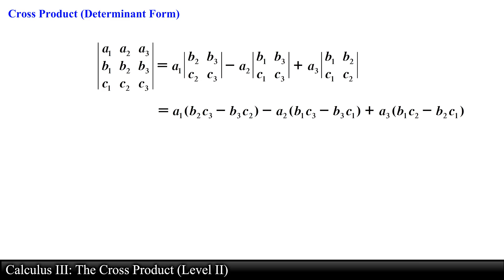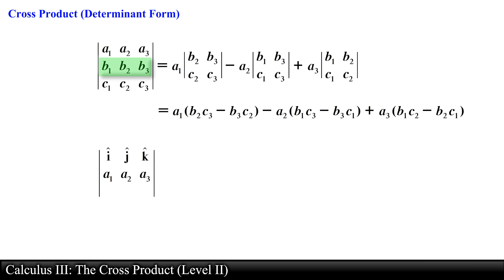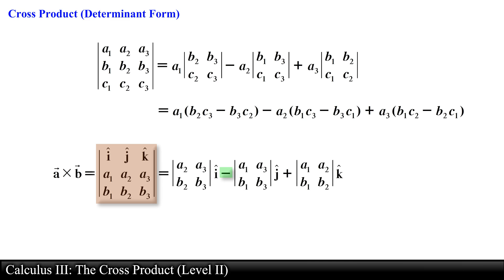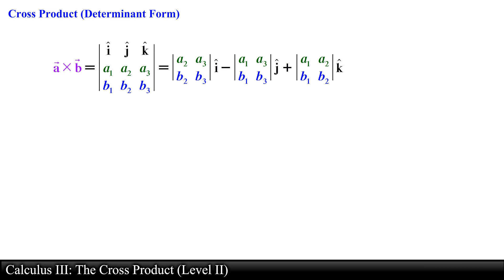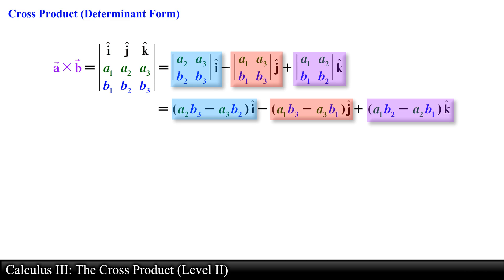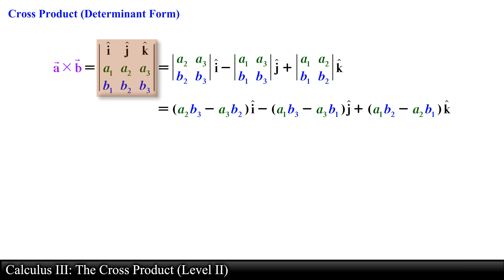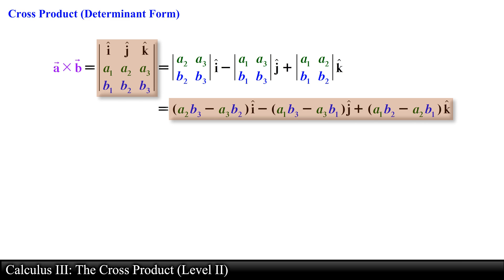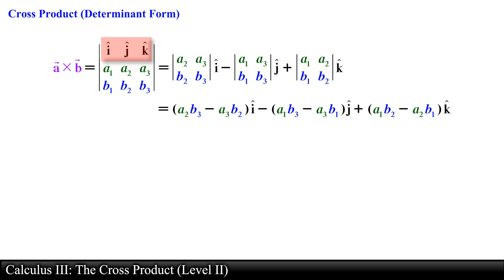If we rewrite the determinant of order 3 by replacing the first row with the standard unit vectors i hat, j hat, and k hat, and replace the second and third rows with the components of vector A and vector B, then vector A crossed with vector B will be equal to this determinant. Note the minus sign in the j hat component. The final expression for the cross product is obtained by computing the determinant for each 2 by 2 square matrix, with each representing a component of the cross product. Keep in mind that this 3 by 3 determinant form is used simply as an aid to remember the formula — it is technically not a determinant because the entries are not all real numbers since we have the unit vectors in the first row. This is probably the easiest way of remembering and computing the cross product.